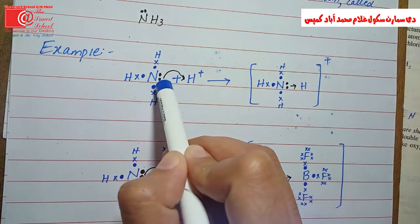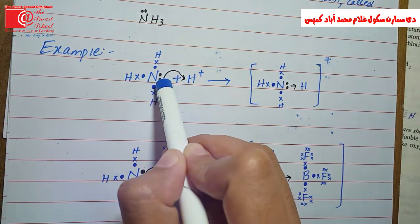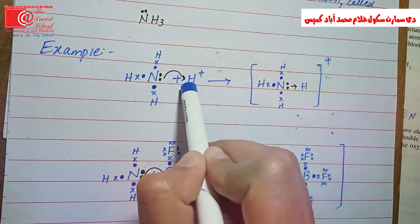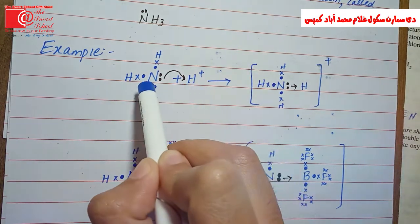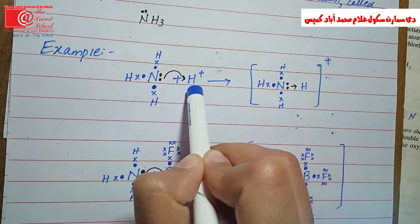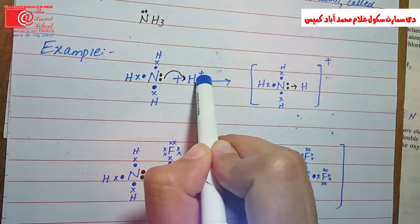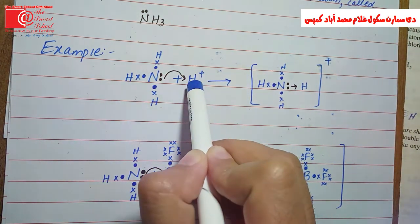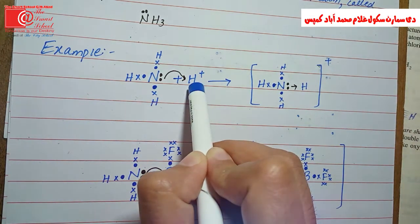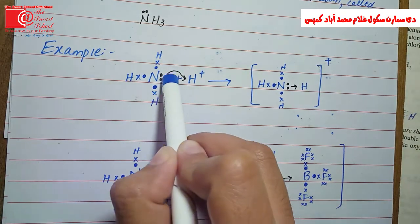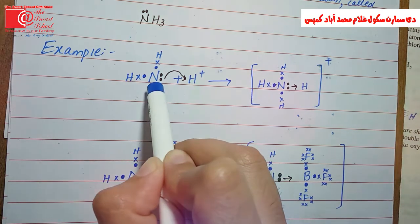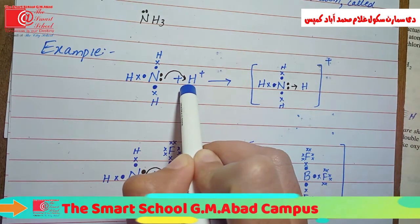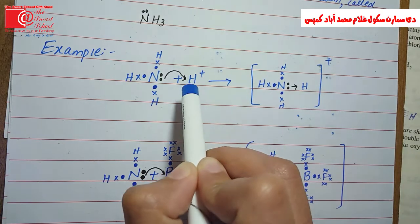In coordinate covalent bonding, the lone pair on nitrogen is the key. The atom with the lone pair will act as a donor. On the other side, ammonia reacts with a hydrogen ion, which has 0 electrons — it is electron deficient. So nitrogen will be the donor because it donates the electron pair, and the hydrogen ion will be the acceptor.